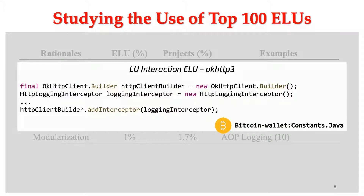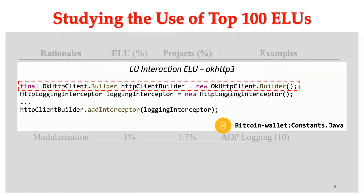In the last column, we show a code snippet for LU interaction. This code snippet is from the project Bitcoin Wallet. The Bitcoin Wallet uses OKHTTP3 for building HTTP connections. In order to have a better idea of what is going on inside OKHTTP3, we need to use the logging interceptor, an LU provided by OKHTTP3. In this way, we get better visibility of the third-party library.